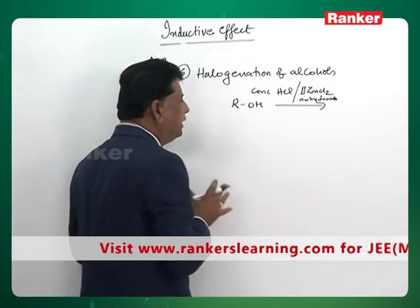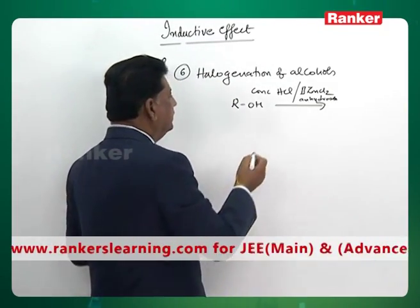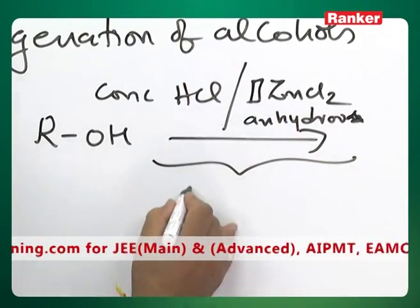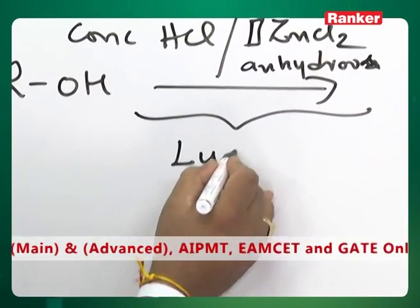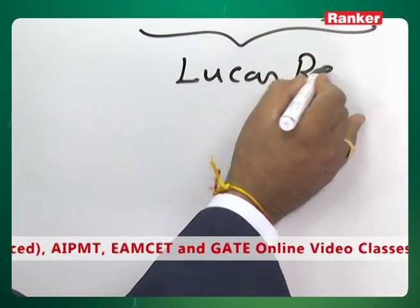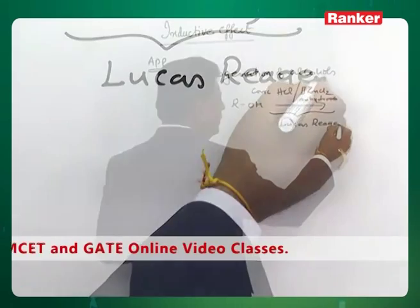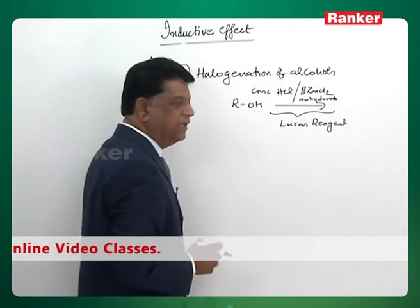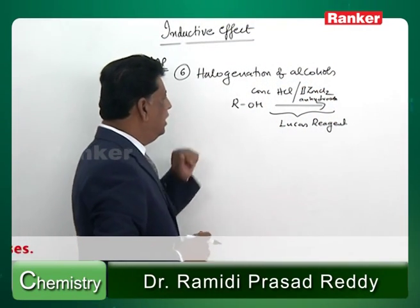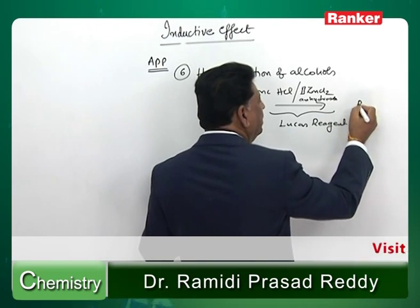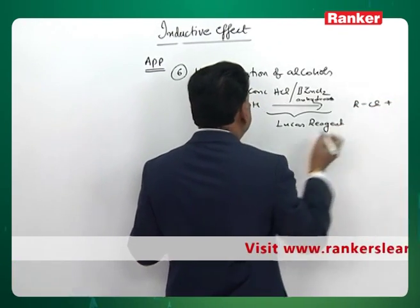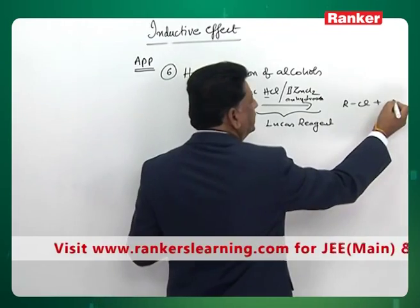Anhydrous zinc chloride and concentrated HCl mixture, this reagent also has a common name called Lucas reagent. So whenever alcohols are added with Lucas reagent, the alcohols become alkyl chlorides. Then OH and H form water.